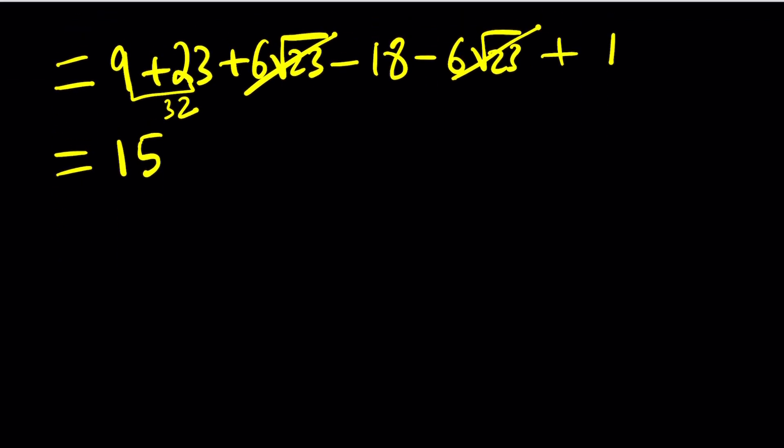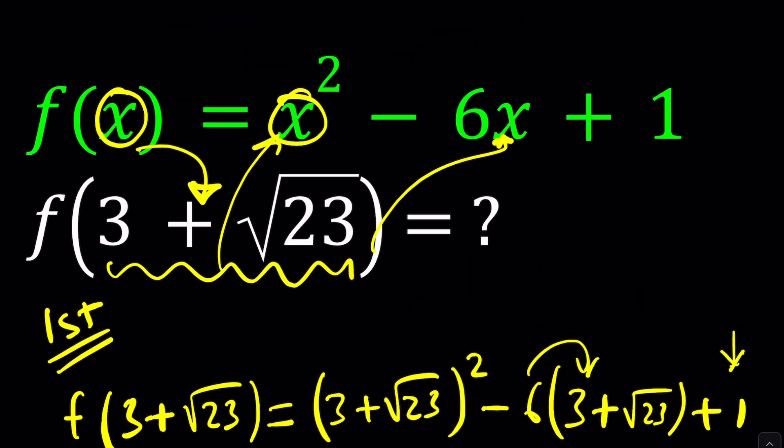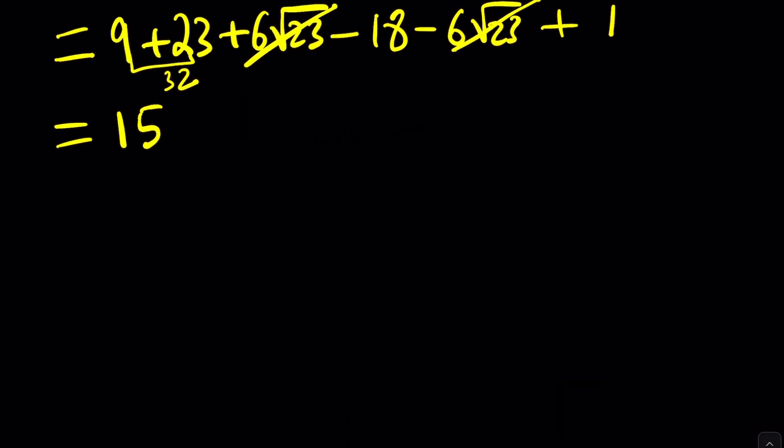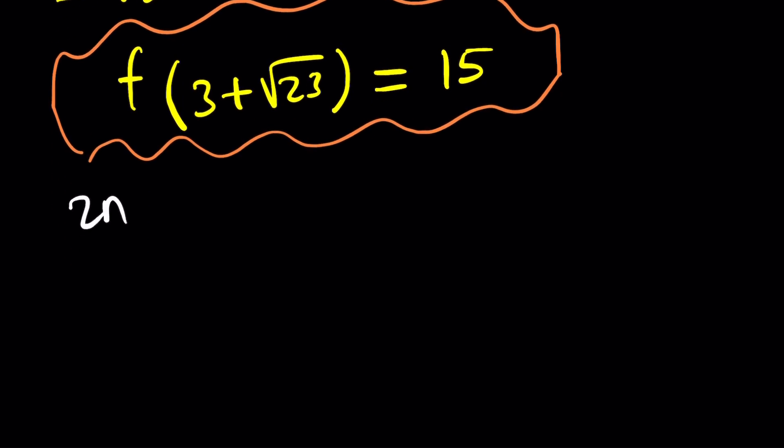That's pretty interesting, don't you think? So we're given a quadratic function like this, and then the answer is not a radical. Why is that happening? Good question. We'll find out with the second method why this is happening. But basically, f of 3 plus root 23 is equal to 15, and that is the answer. Let's check out the second method and see if we can get the exact same result, maybe a little easier.